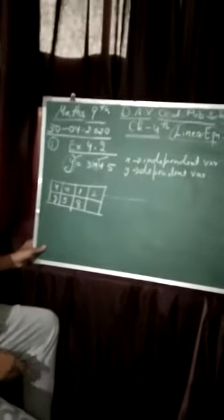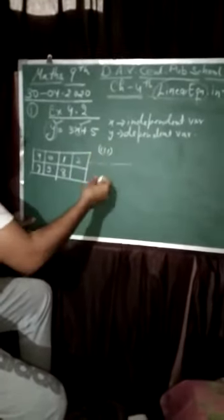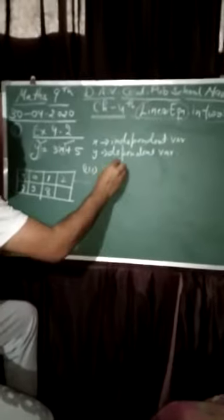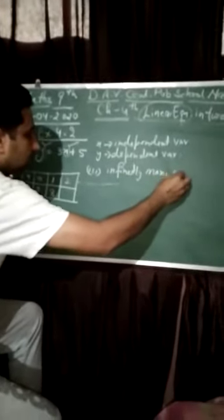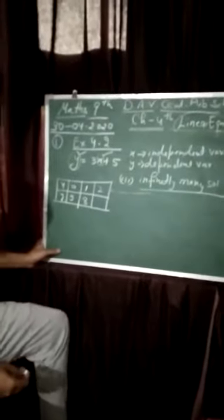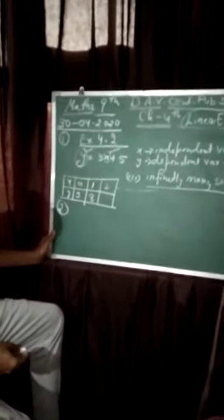The value of x is independent variable. The answer is the third option, infinitely many solutions. Now I can move on to question number two.